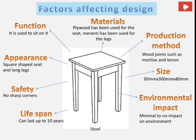The second product is a stool. Function: to sit on. Appearance: square-shaped seat with long legs. Safety: no sharp edges. Lifespan: can last up to 10 years. Materials: plywood for the seat and another wood for the legs. Production method: wood joints such as mortise and tenon. Size: 300mm by 30mm by 80mm — length, breadth, and height. Environmental impact: since wood is a natural material, it has minimal to no impact on the environment.